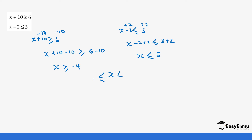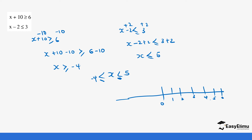So x is greater than or equal to negative 4 and x is less than or equal to 5. Our values lie between 5 and negative 4 on the number line. Marking: 1, 2, 3, 4, 5, and negative 1, negative 2, negative 3, negative 4. Since 5 and negative 4 are both part of the values of x, we fill both circles. The values of x lie between negative 4 and 5, inclusive.